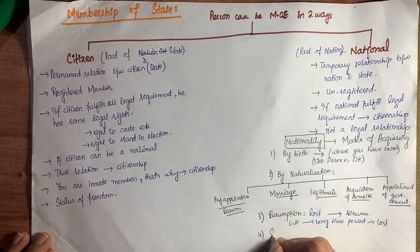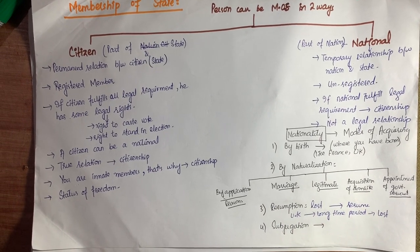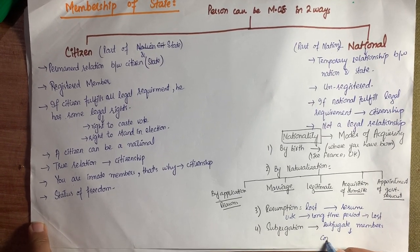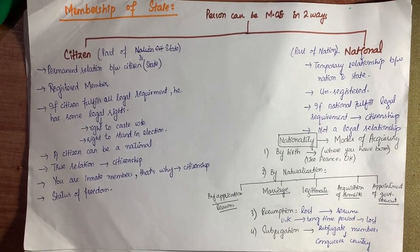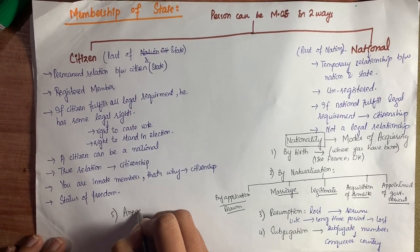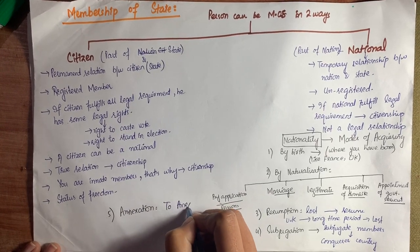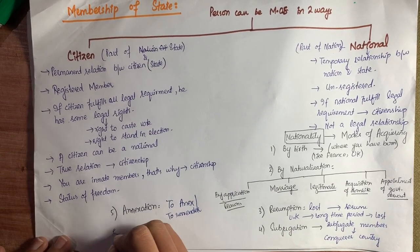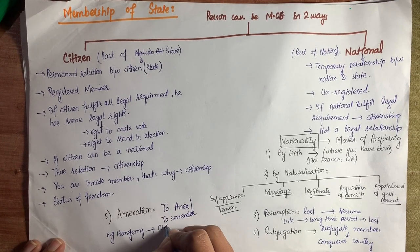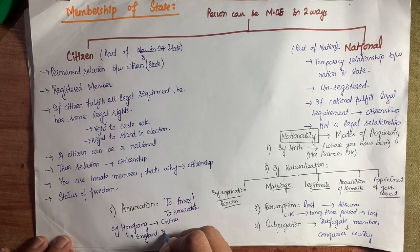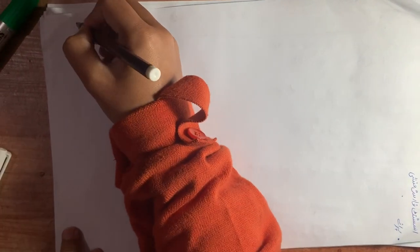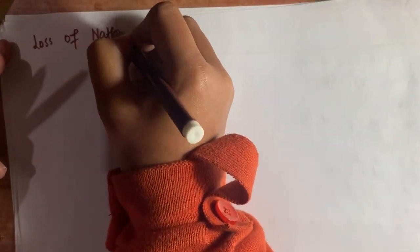The third mode is resumption — nationality can be acquired by resumption if you already had the nationality of a state but lost it. You can apply for resumption by fulfilling all requirements of that state, and your nationality can be resumed. For example, in the UK, if you are absent for a long time, your nationality can be lost. Number four is subjugation — when any country is subjugated by another country, the subjugated members automatically become members of the conqueror country. Number five is annexation — if any state surrenders and asks to be annexed with another state, its people become members of that state. For example, Hong Kong was annexed with England for 40 years.